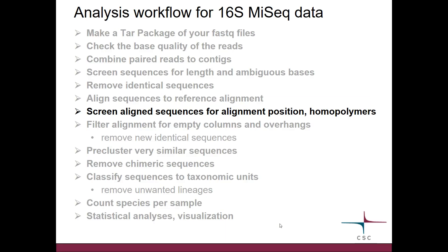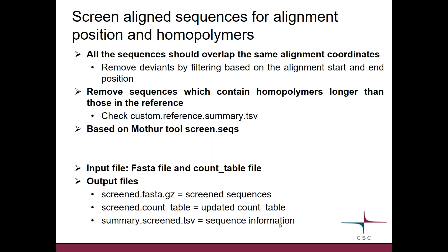After the alignment has been accomplished, we want to do another round of screening. We are now screening the aligned sequences for the alignment position and homopolymers. Ideally all the sequences should overlap the same alignment coordinates, so there might be deviants which start much before or end much after. We want to do filtering based on alignment start and end position, and we also want to remove sequences which contain homopolymers that are longer than those in the reference.